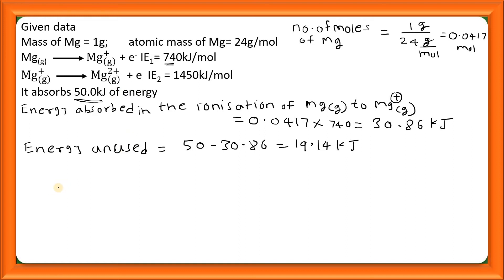Therefore we can write number of moles of Mg⁺ ions converted to Mg²⁺ ions will be 19.14 divided by 1450. See इसका units देखें, यह kilojoules है और इसका kilojoules per mole है, तो finally में क्या मिला, number of moles of Mg⁺ ions converted to Mg²⁺, so this is equal to 0.0132.